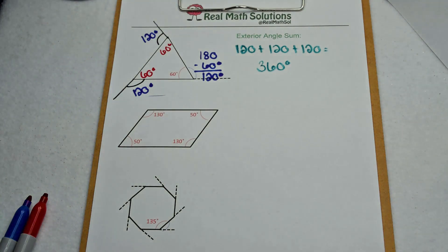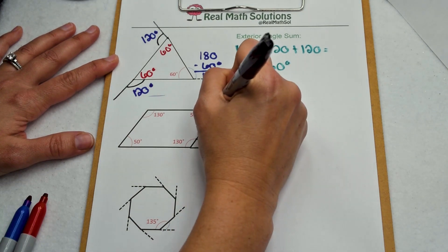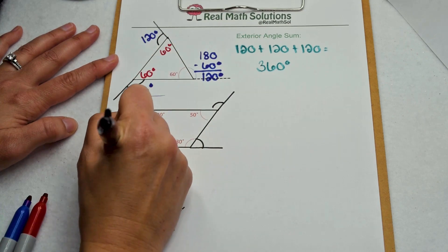Well, let's test this on another figure. Here we have a quadrilateral. We're going to go around and rotate counterclockwise and extend the edges to create the exterior angles on that quadrilateral.